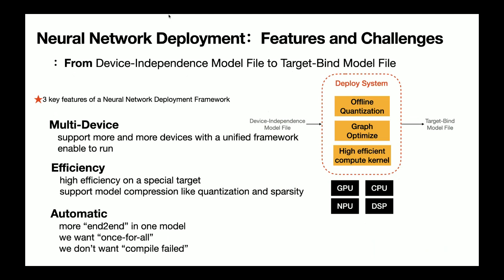We summarize neural network deployment into three core goals and challenges: multi-device, high efficiency, and automation. After a model is deployed on different hardware, we hope the model has relatively high performance on specific hardware. Optimization measures include efficient compute kernels, model quantization, model sparsity, and other technologies. We also hope that the model deployment can be updated once and deployed everywhere, with no compiler compatibility issues.